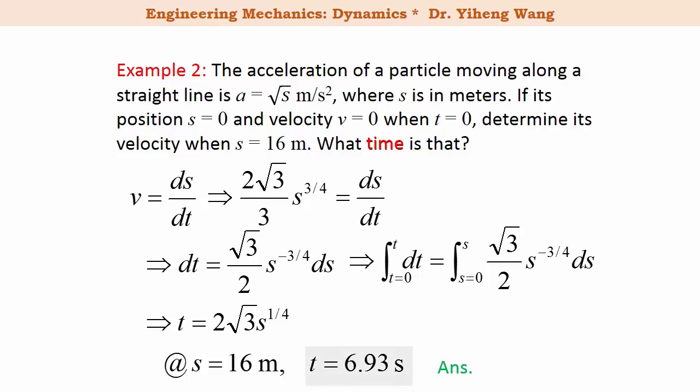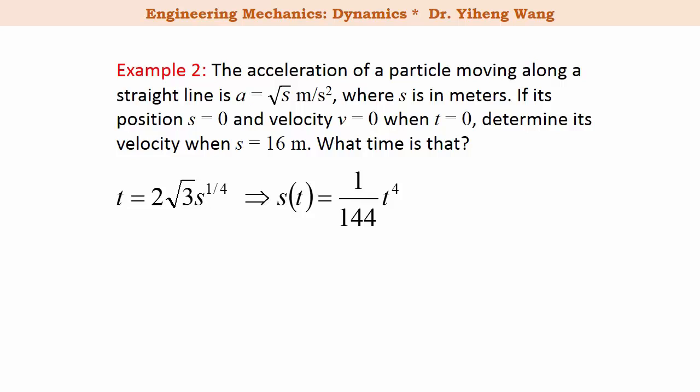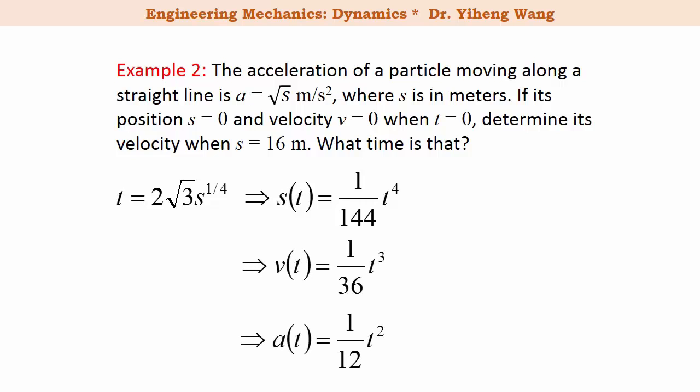Here we have time as a function of position. Normally we rewrite it as position as a function of time, since time is always the independent variable. After rearrangement we get position as a function of time. We can also get velocity as a function of time, or the acceleration as a function of time — and as you can see, acceleration does equal the square root of position s, confirming our original expression.